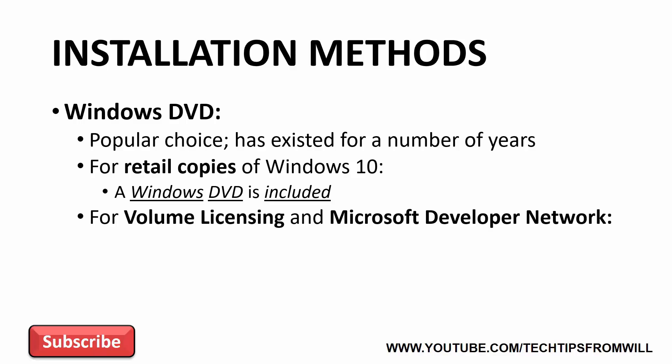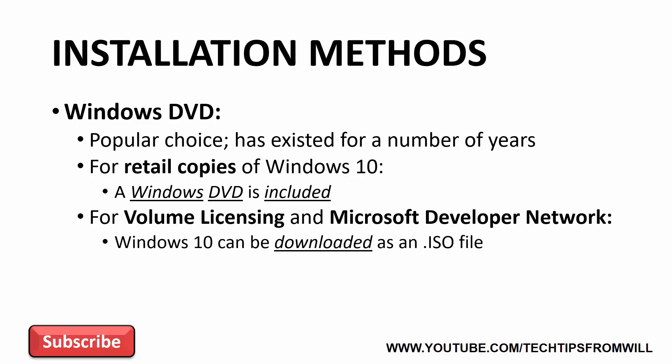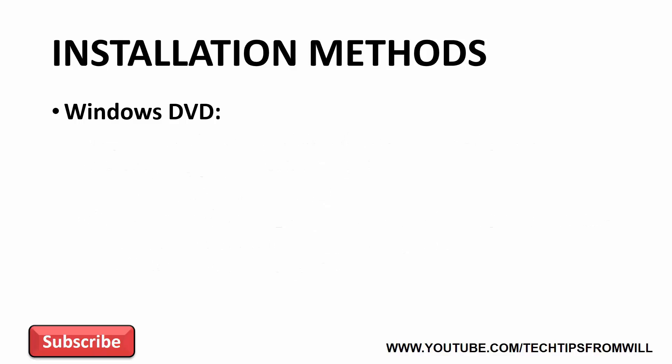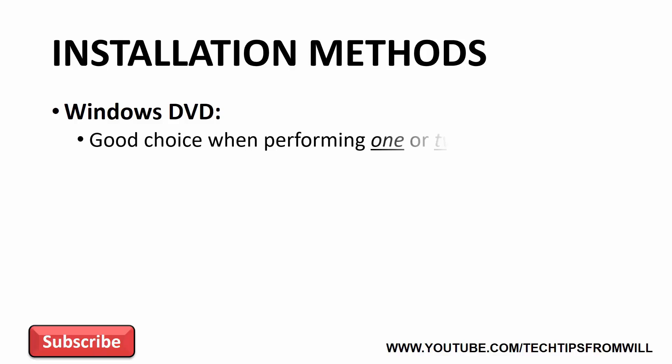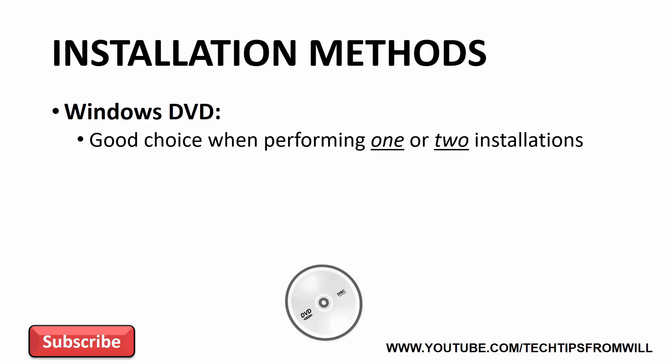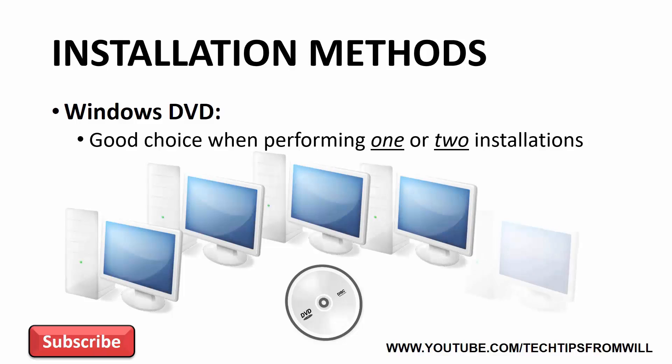If you're a customer of Microsoft's volume licensing scheme or if you are subscribed to the Microsoft Developer Network, you're able to download Windows 10 as an ISO file. This ISO file can be burnt to a DVD which can then be used to install Windows 10. Regardless of whether you purchase the Windows DVD or create your own, using a DVD to install Windows 10 is a good choice if you have just one or two devices.